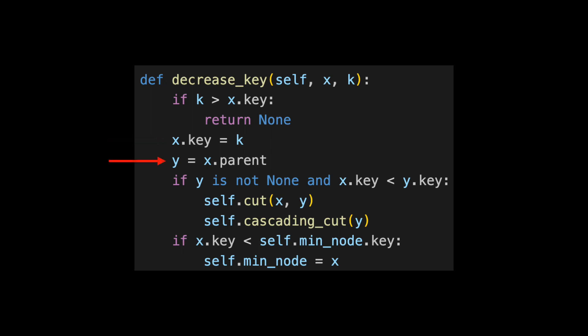We store a pointer to X's parent called Y. We then check to see if we've broken our min heap properties. Remember that a key of a parent must be less than or equal to the key of the child. In other words, nodes get larger as you go down. This is the statement to check that, and if it's true, we call cut and cascading cut, which I'll discuss in detail in a bit.